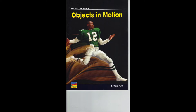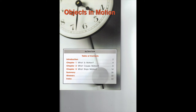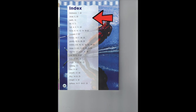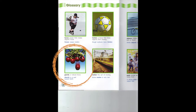Let's look at some other features of non-fiction text. The first feature that all non-fiction texts have is a table of contents. Here you can find where to locate what causes motion — that's found in chapter 2. Another feature of non-fiction texts is the index, which tells us where you can find certain words. Another feature is the glossary, which tells us the definition of words that we see in the text.